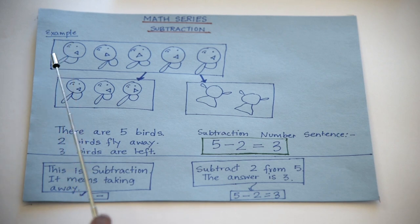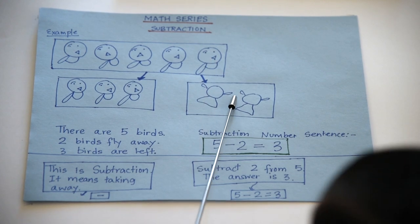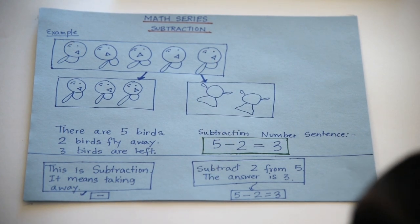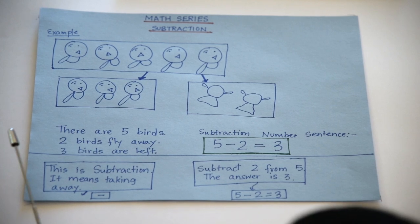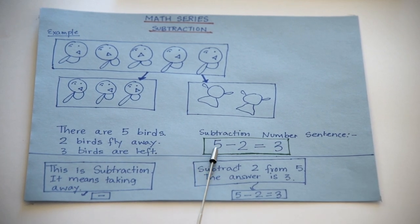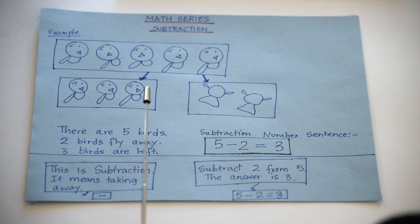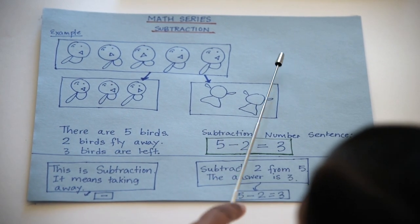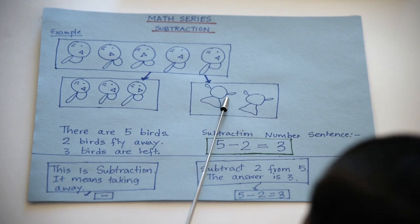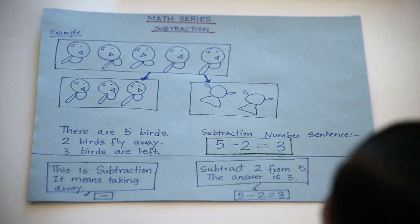Let's do an example of a subtraction problem. There are five birds on the tree. Two birds fly away. How many birds are left? Three. The subtraction number sentence is five minus two equals three. We are taking things away — some parts are going away — and we subtract two from five to get the answer.